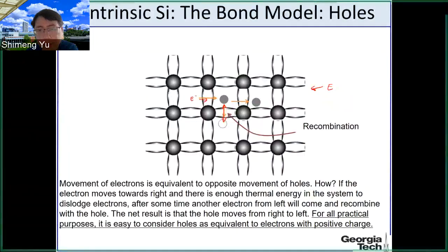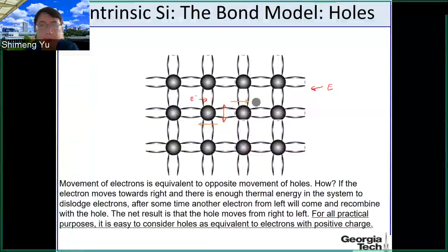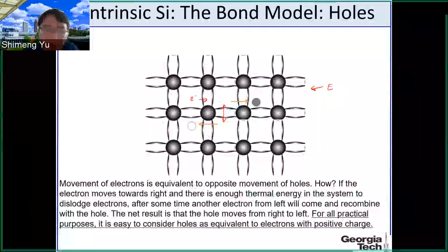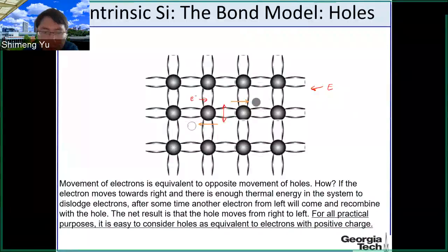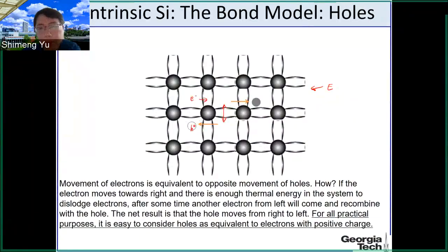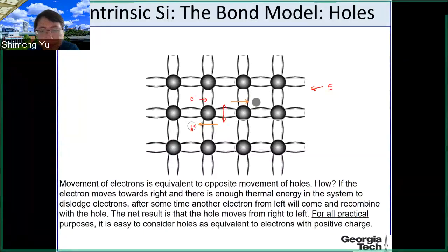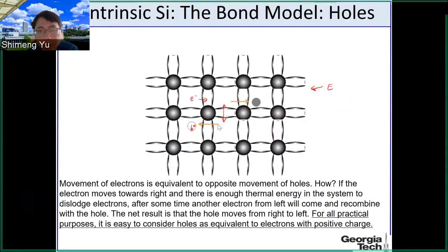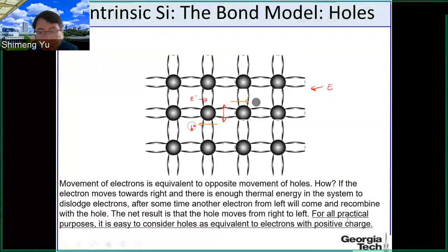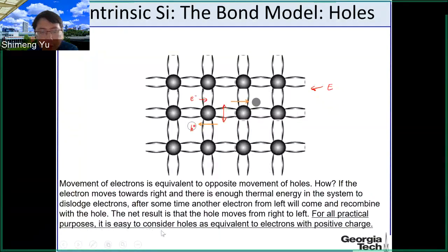As a result, that electron and hole pair disappear — this is called recombination. But you can think that the hole is moving: if the hole was originally here and recombination occurs, the hole disappears at this location but shows up at that location. So it's like exchanging the locations of the electron and hole — electrons move to the right and holes move to the left. This is the equivalence between electron current and hole current. For all practical purposes, holes are equivalent to electrons with positive charge.